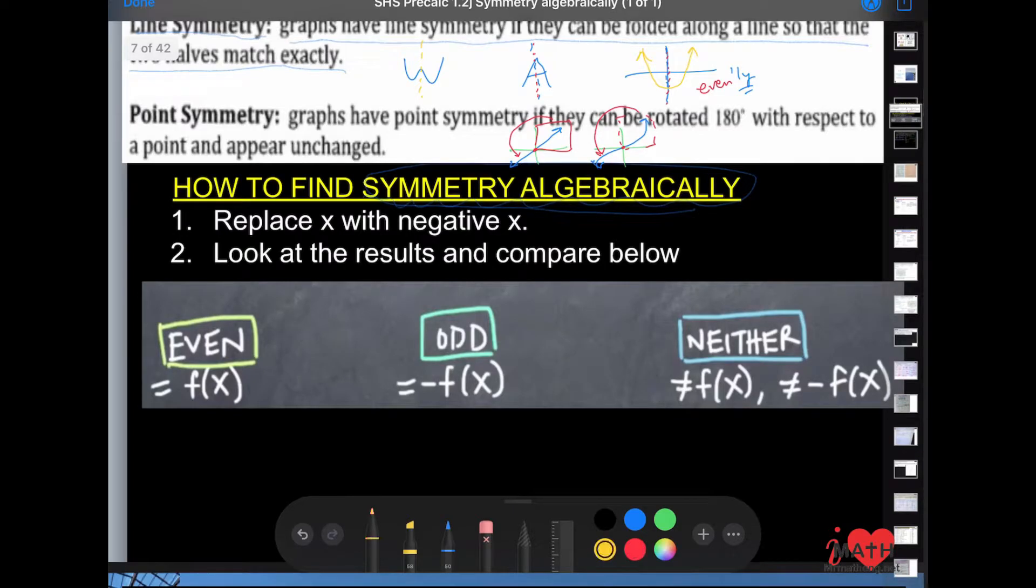So how do you find this algebraically? Well, replace x with negative x. Every x value you see in your polynomial, you're going to take the x and put in negative x. Then you're looking at the results and you're going to compare it below. You're going to get one of these three conditions.